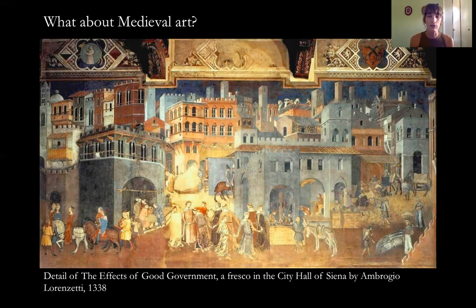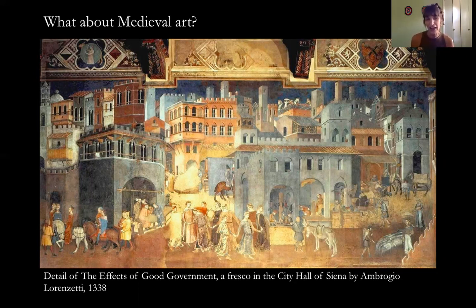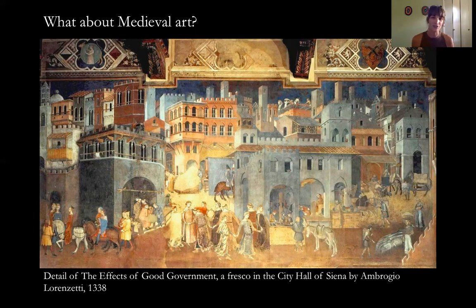So let's look to medieval art. We've talked about this period of history — typically called the medieval period, and part of it is the Byzantine period. This has also been categorized as the Dark Ages and the Middle Ages, signifying that this period in time exists in between two other times that are probably better than it. These are all negative connotations with this period. Medieval means 'middle' as well, and certainly 'Dark Ages' doesn't sound very good.